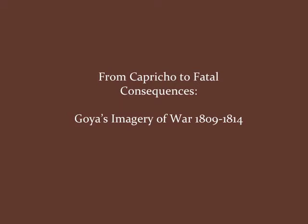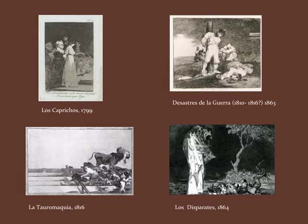I'd like to begin with a short prologue about Goya's titles. The four series of etchings created by Francisco Goya are familiar to many: Los Caprichos, published in 1799; Los Desastres de la Guerra, published posthumously in 1863, though etched from 1810 to 1814; La Torre de Machia, published during his life in 1816; and Los Disparates, also published posthumously in 1864.